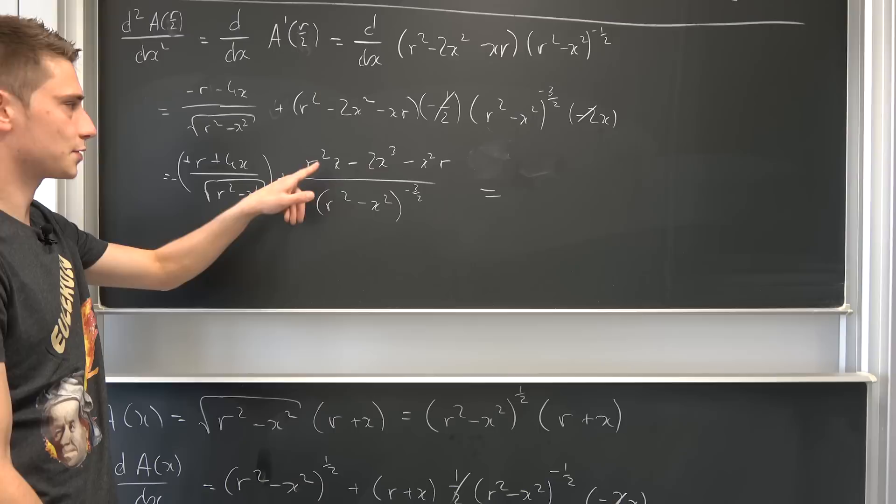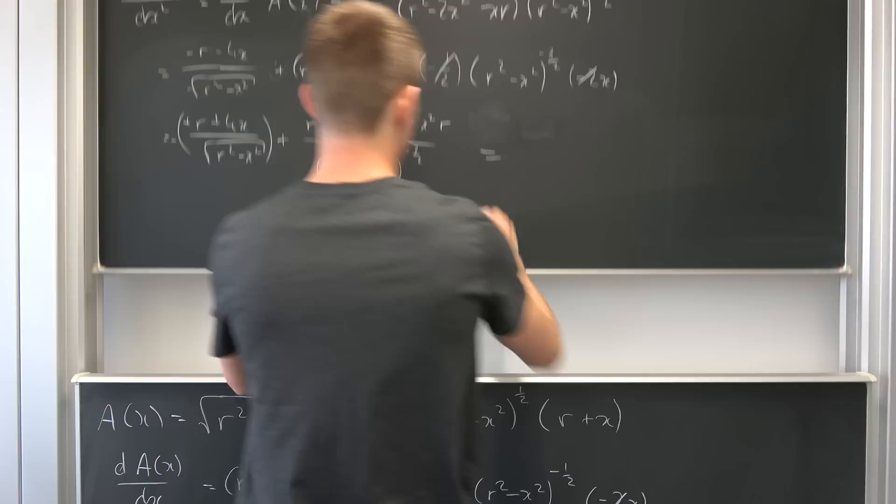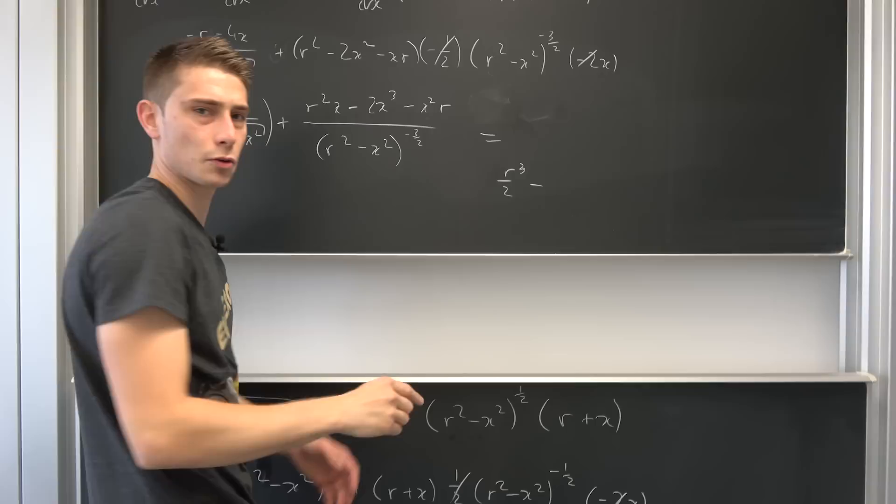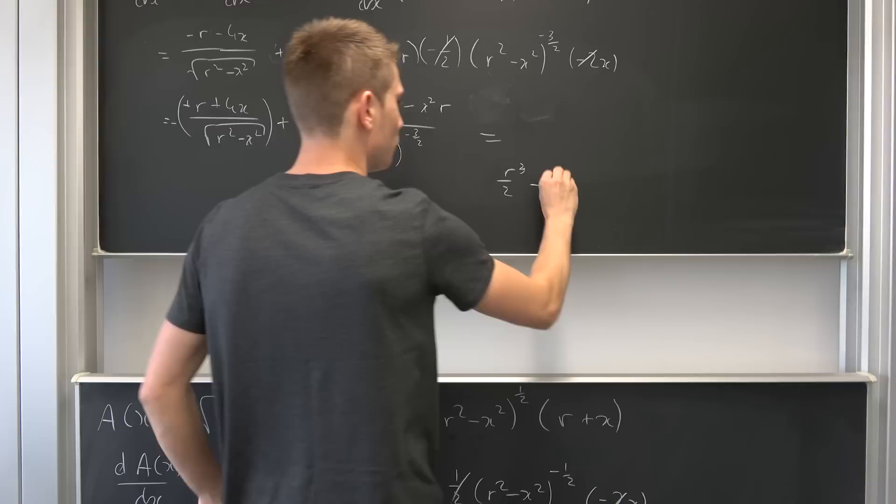For example, if we have r squared times x, so we have r squared times x but x is nothing but r over 2. So this is r to the third power over 2 and we have negative, this is x squared, so this is r to the third power over 4. So this is going to be r to the third power over 4.